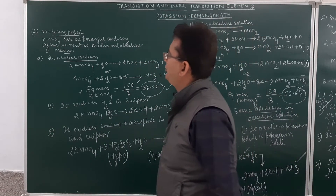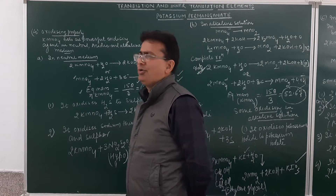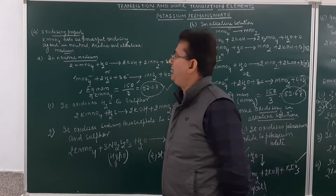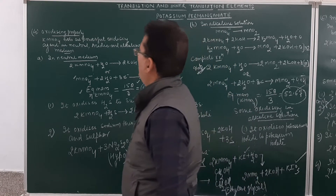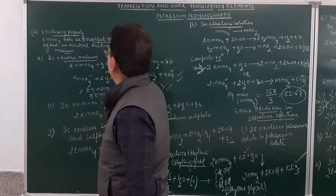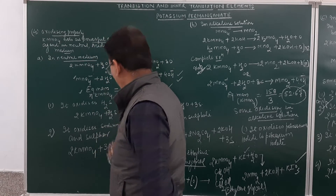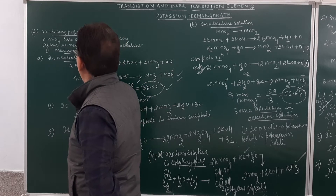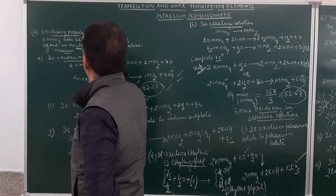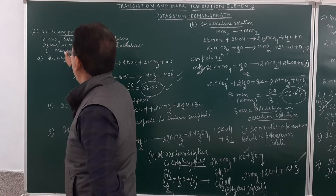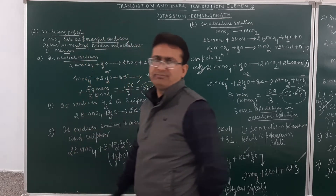Today we start with the fourth property of KMnO4, which is its oxidizing property. KMnO4 acts as a powerful oxidizing agent in the neutral medium, in acidic medium, as well as in the alkaline medium.